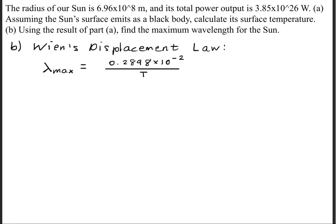In order to solve part B, we need to use Wien's displacement law, which states that the maximum wavelength is equal to 0.2898 times 10 to the minus 2 divided by the temperature. We'll go ahead and plug in the value for our temperature, and this will give us a wavelength of 501 nanometers.